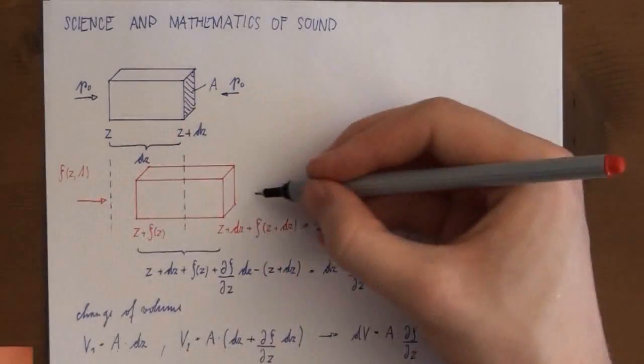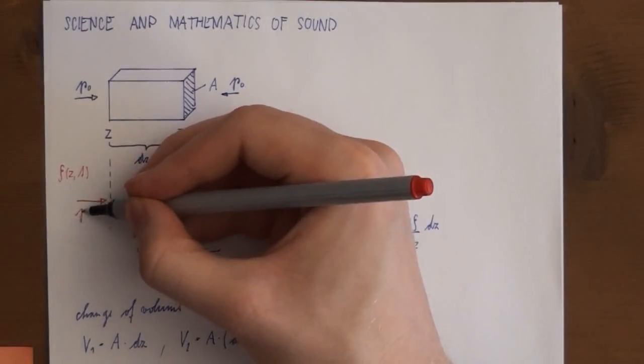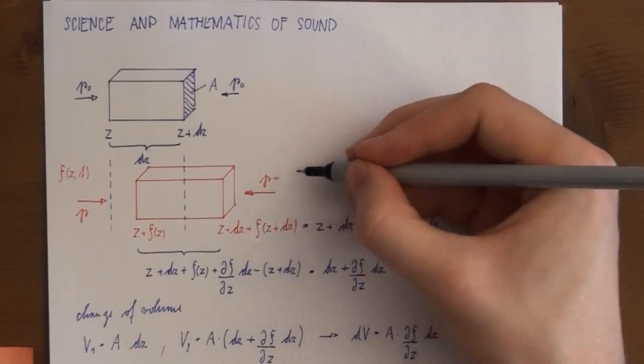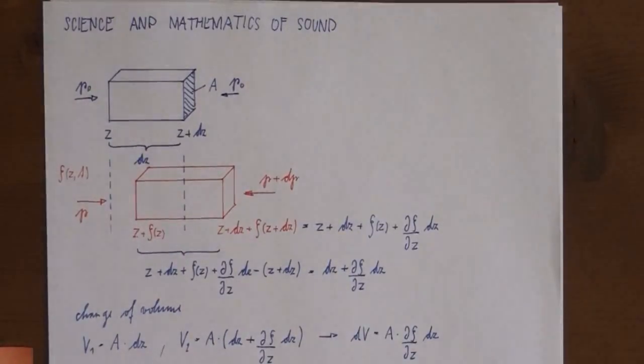The change of volume is proportional to a change of pressure. If we now define the total pressure at the left boundary as P it consequently follows that the total pressure at the right boundary becomes P plus DP.